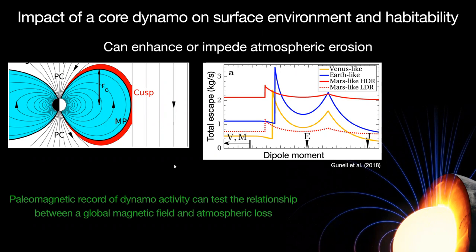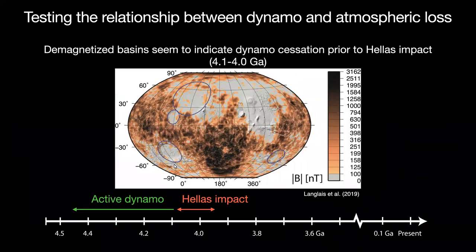If we can read the paleomagnetic record of dynamo activity on different planets and correlate them with times of relatively thick or thin atmosphere, that can directly test the relationship between magnetic fields and atmospheric loss. People are trying to do this for Mars. One of the most robust results from orbital surveys of the large crustal magnetic field is these large demagnetized zones corresponding to large impact basins. The Hellas basin is the best dated and oldest of these, and it is clearly non-magnetized compared to the surrounding material. People have hypothesized that this means the dynamo on Mars had ceased operating by the time the Hellas impact occurred, at about 4.0 to 4.1 billion years ago.